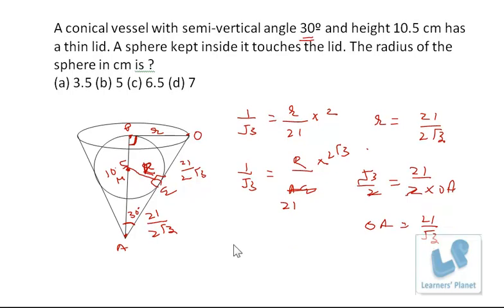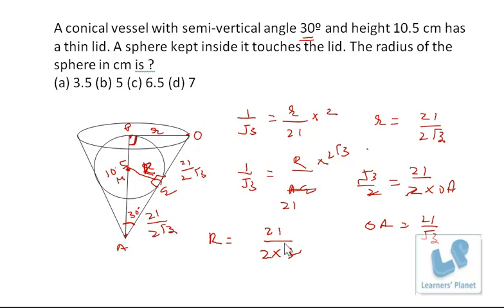Now the only unknown value is R. So R = (21/2√3) × (1/√3) = 21/(2×3) = 21/6 = 7/2 = 3.5 centimeters.